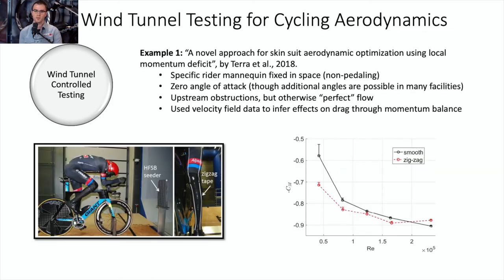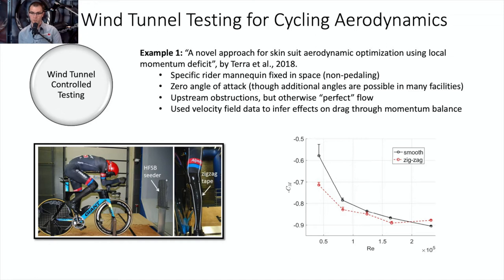The first example is work by Tara et al. from TU Delft — an approach for skin suit aerodynamic optimization using local velocity field measurements. They used a zigzag boundary layer trip, which I mentioned earlier for reducing pressure drag. By measuring the local velocity field with that zigzag tape, they showed that there is a significant drag reduction, expressed as a momentum coefficient C_M, which is a proxy for measuring drag.